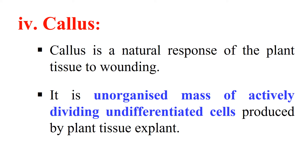The unorganized and undifferentiated mass of actively dividing cells is known as Callus. It is a very important term because in plant tissue culture a complete plant can be produced either directly or from this Callus — so the starting phase of a complete plant may be Callus. This Callus has highly dividing cells but they are in an unorganized and undifferentiated state.